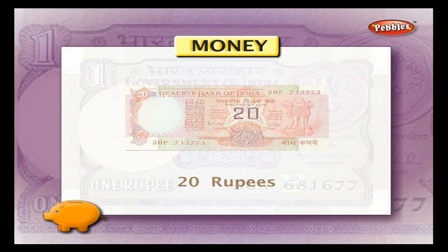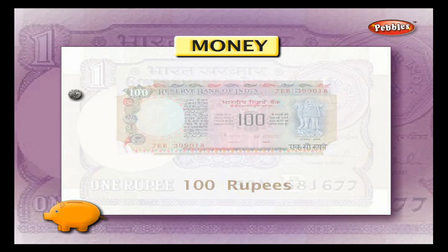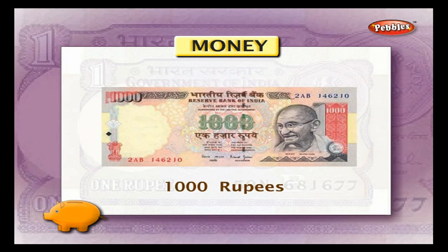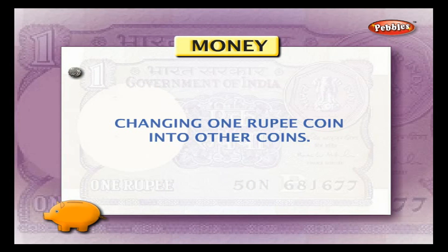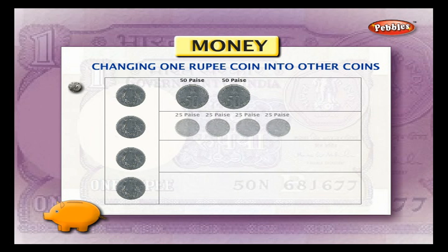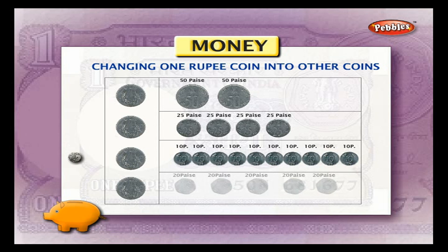Changing 1 rupee coin into other coins: a 1 rupee coin can be replaced by 2 fifty paisa coins, or 4 twenty-five paisa coins, or 10 ten paisa coins, and 5 twenty paisa coins.